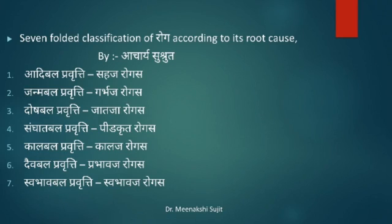The 7-fold classification of roga according to its root cause is explained by Acharya Sushruta. The seven types are: Adhi Bala Pravrutti, Janma Bala Pravrutti, Dosha Bala Pravrutti, Sangata Bala Pravrutti, Kala Bala Pravrutti, Daiva Bala Pravrutti, and Swabhava Bala Pravrutti. All categories of diseases fall within these classifications.